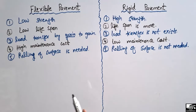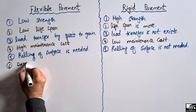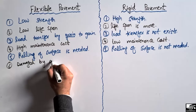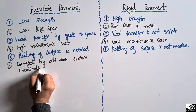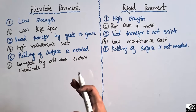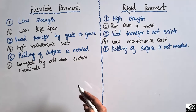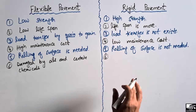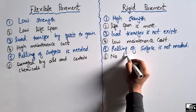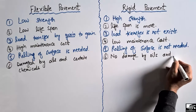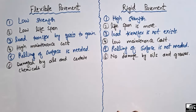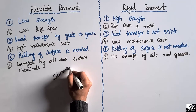Flexible pavement can be damaged by oils and certain chemicals — it is vulnerable to oils and certain chemicals. While rigid pavement has no damage from oils and greases. These were the main differences between the two types of pavement. Hope you guys understand, and don't forget to subscribe to our channel for daily civil engineering videos. Thank you for watching.